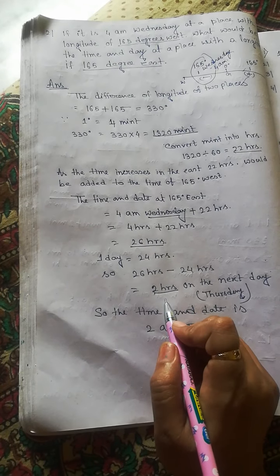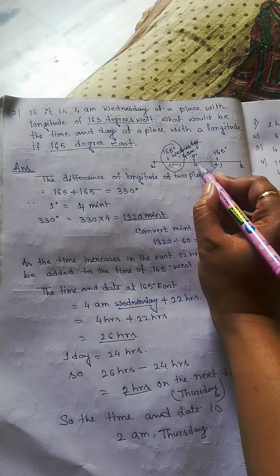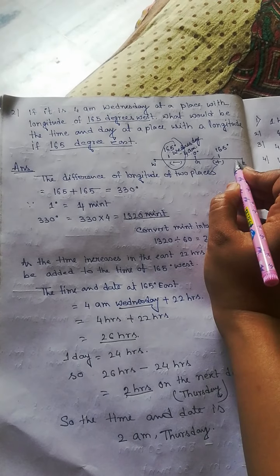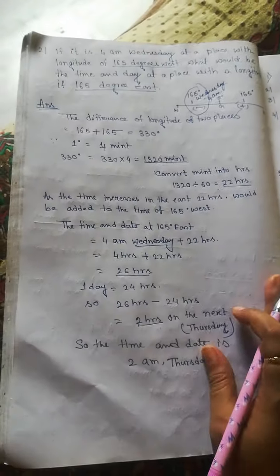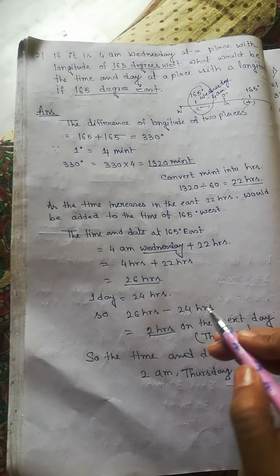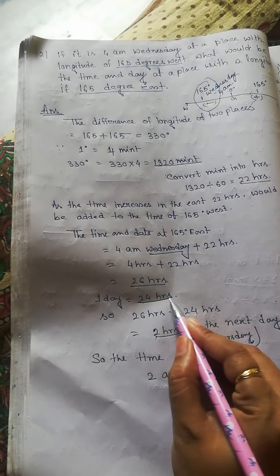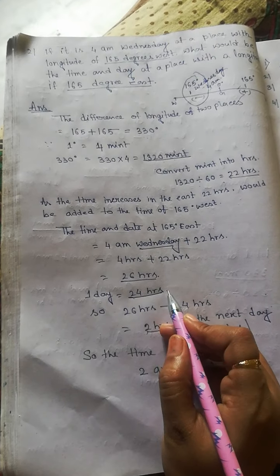Next, you already know that if we go to the eastern hemisphere, the time is always added. Okay, so now the 2 hours is added. You already know that 24 hours in our hand, that means one day is already in our hand.